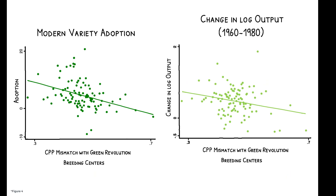As a case study of particular interest, these figures show how inappropriateness shaped the impact of the Green Revolution of the 1960s and 70s. This was a concerted international effort to develop high-yielding varieties of staple crops for countries at risk of famine. But the adoption and production of these new varieties was inhibited in areas where the CPP environment was dissimilar from that of the research centers involved.